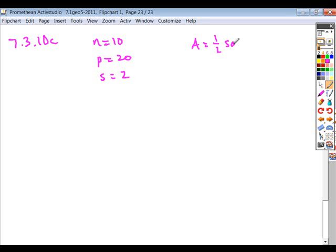We use our area formula 1 half san. You could also use 1 half ap. Either way is fine. Our S value was 2. Our apothem is unknown. Our n value is 10.